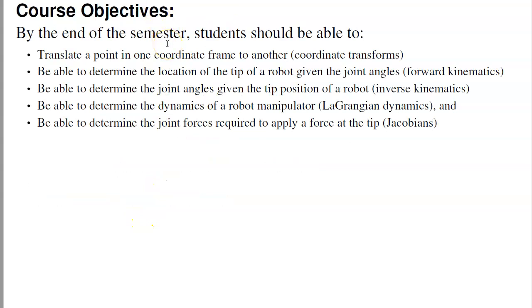The objective is that by the end of the semester, you can take a point from one coordinate frame and translate it to another. You can determine the tip position of a robot given the joint angles — that's forward kinematics. You can determine the joint angles given the tip position — that's inverse kinematics. You'll also be able to determine the Lagrangian dynamics of a robot and determine the tip forces required to apply force.